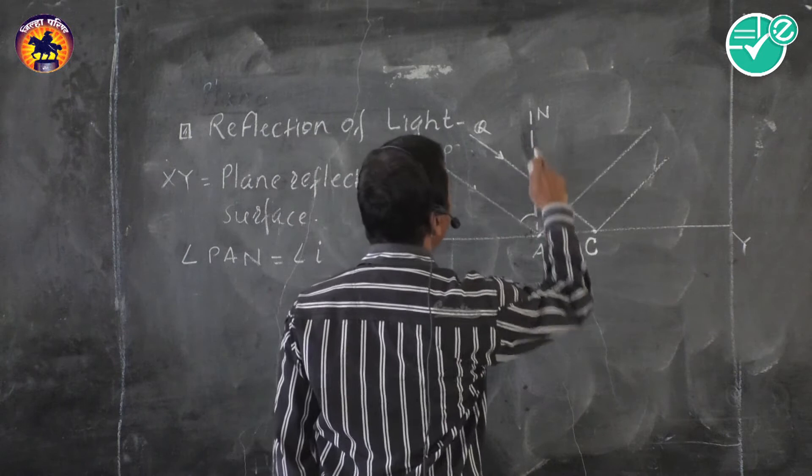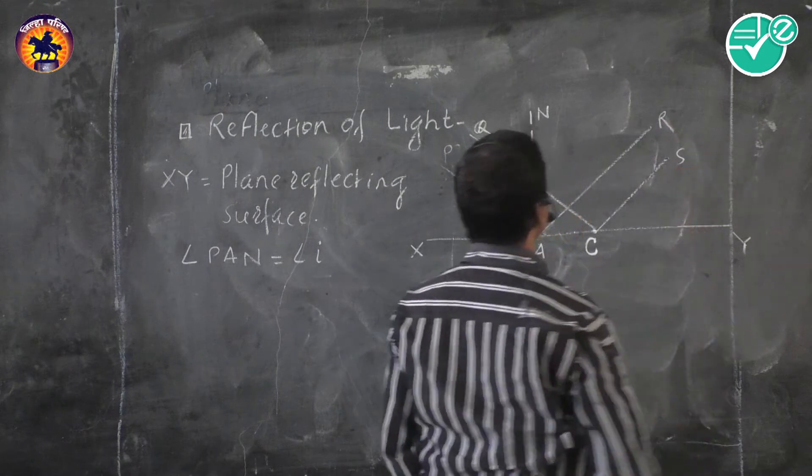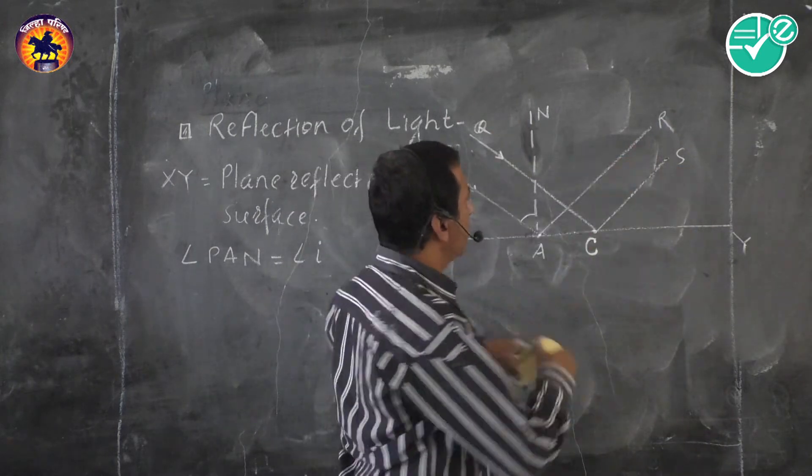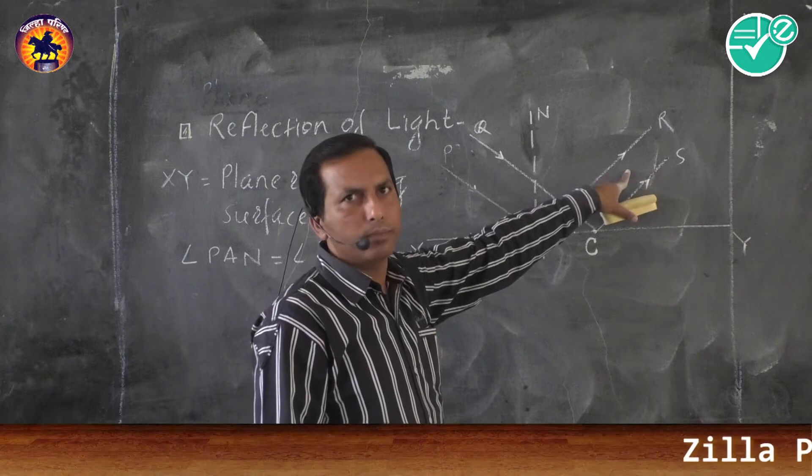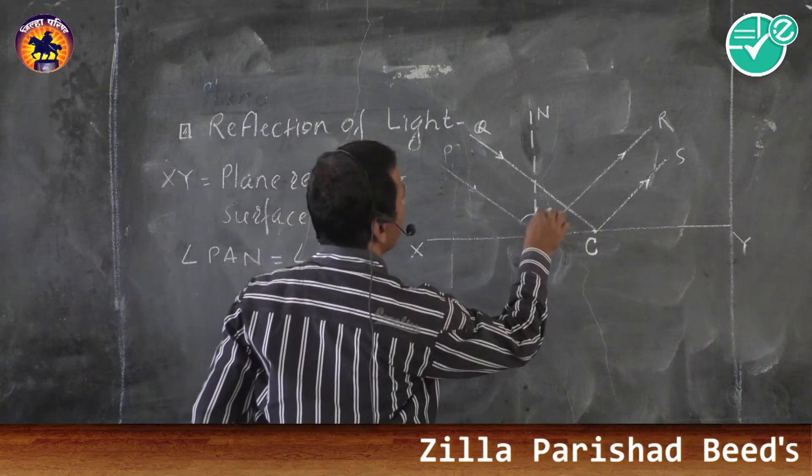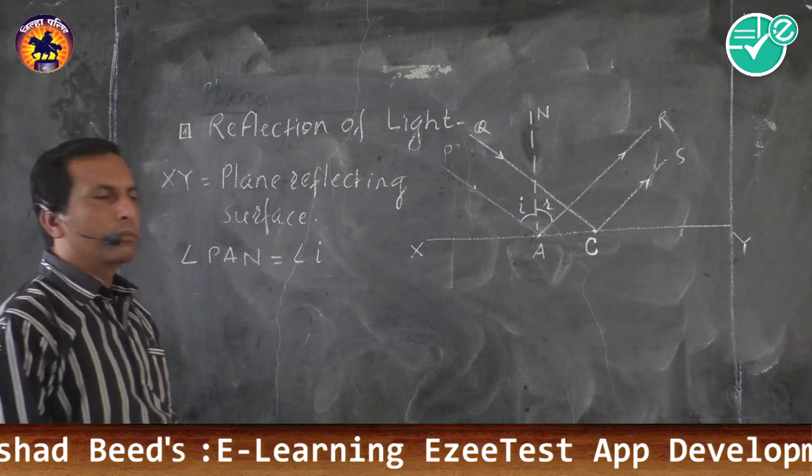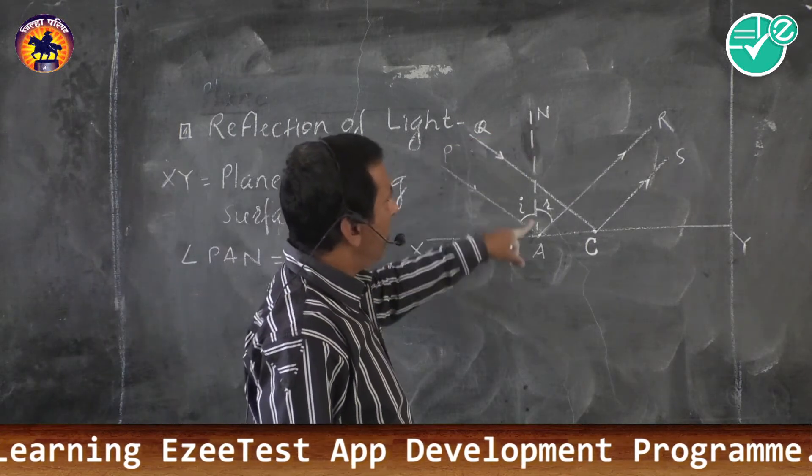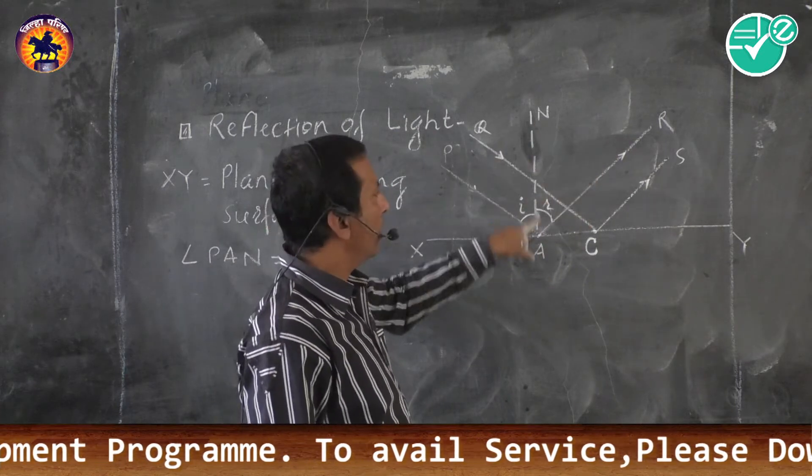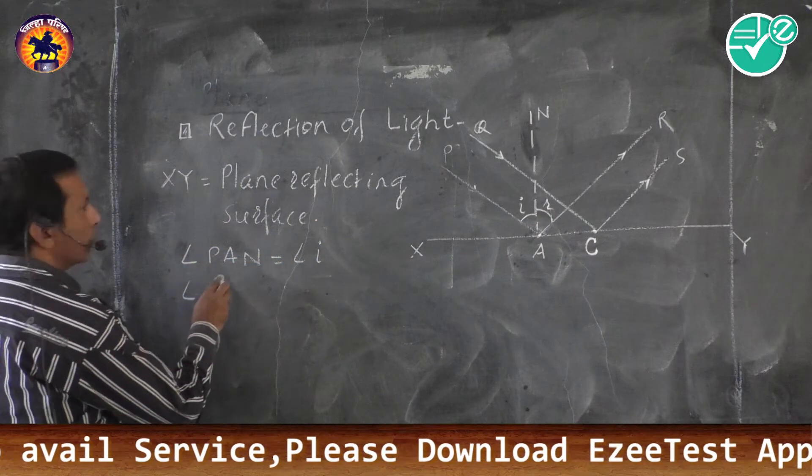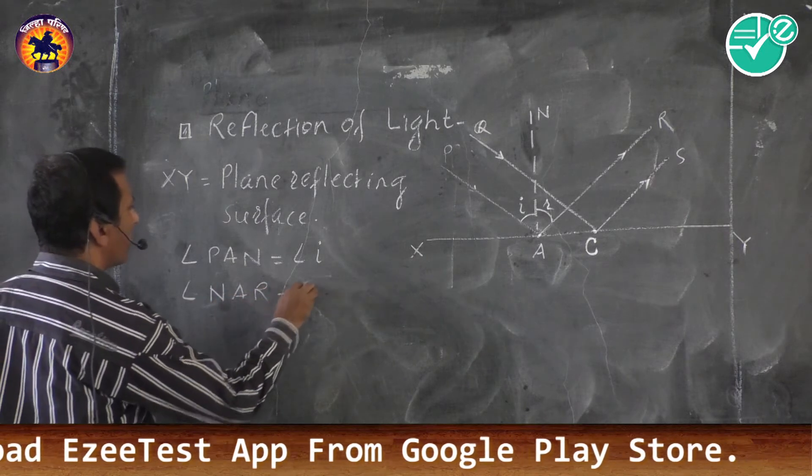And angle NAR. This is the angle between normal and reflected ray, called as angle of reflection, denoted by R. Angle NAR is the angle between reflected ray and normal. That is angle of reflection.